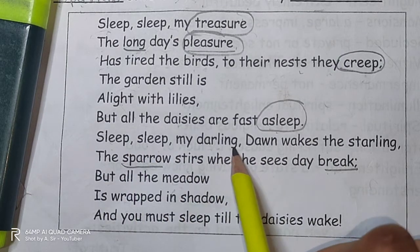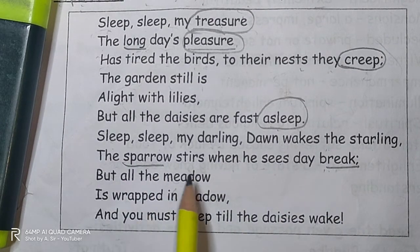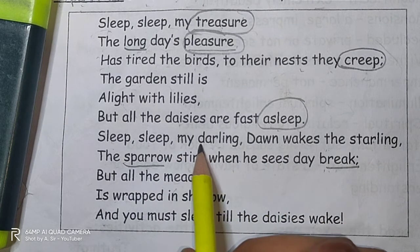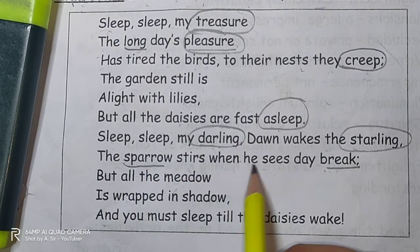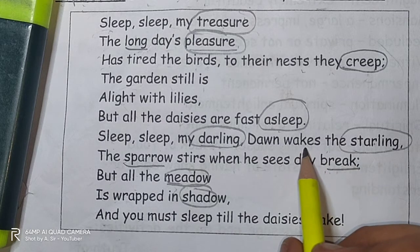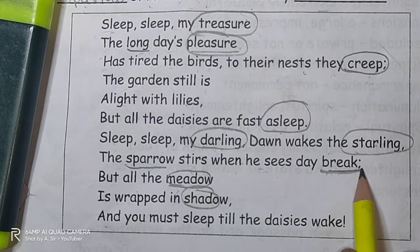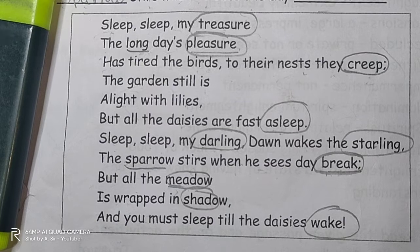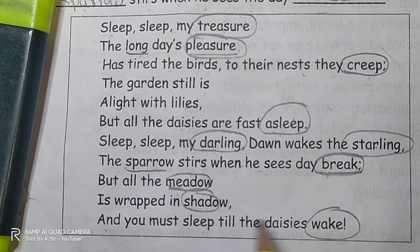Continuing: 'Sleep, sleep my darling. Dawn wakes the starling.' So darling and starling are rhyming — pair three: darling and starling. Then 'but all the meadow is wrapped in shadow' — so meadow and shadow are rhyming — pair four: meadow and shadow. And finally, 'the sparrow stirs when he sees the daybreak' and 'you must sleep till the daisies wake' — so break and wake are rhyming — pair five: break and wake. So there are a total of 5 rhyming word pairs.